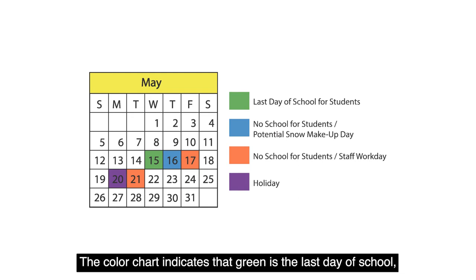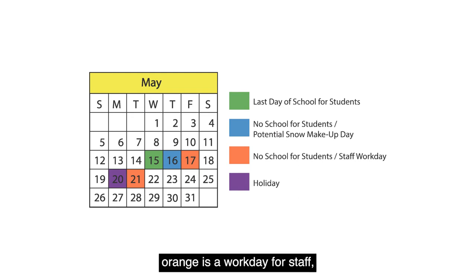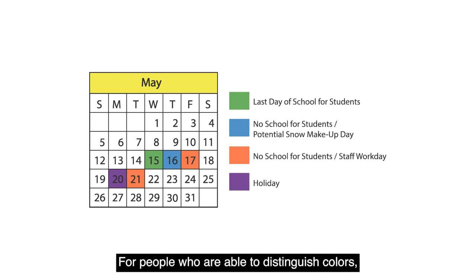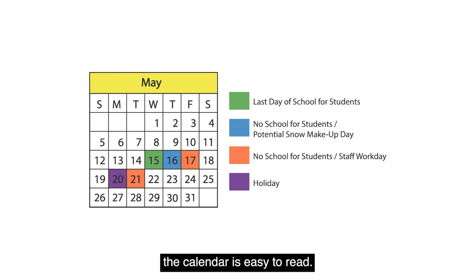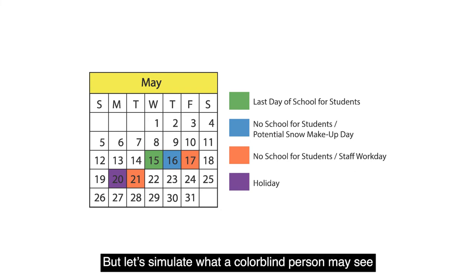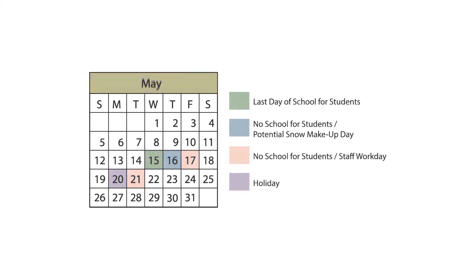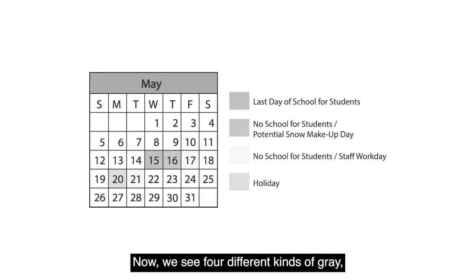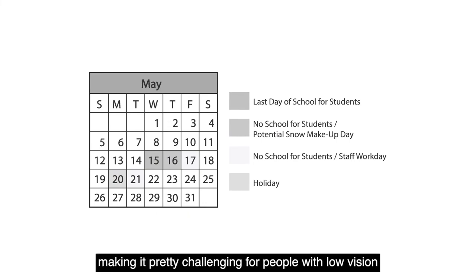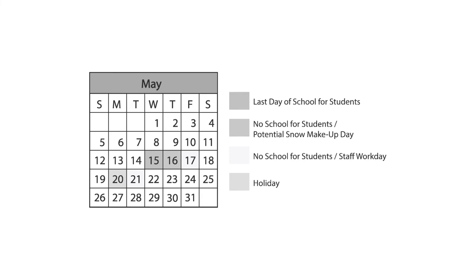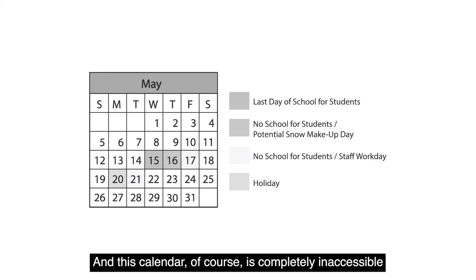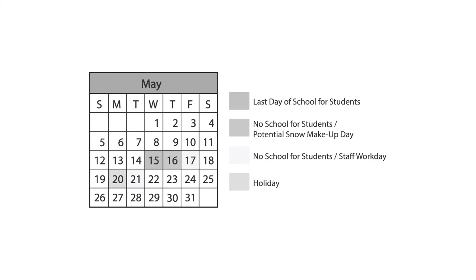Our last example: the all-too-familiar school calendar. This calendar heavily relies on color — green is the last day of school, blue is a snow makeup day, orange is a workday for staff, and purple is a holiday. For people who can distinguish colors the calendar is easy to read, but let's simulate what a colorblind person may see by putting the entire calendar in grayscale. Now we see four different kinds of gray, making it challenging for people with low vision to understand which days fall into which categories. This calendar is completely inaccessible to someone who is blind.